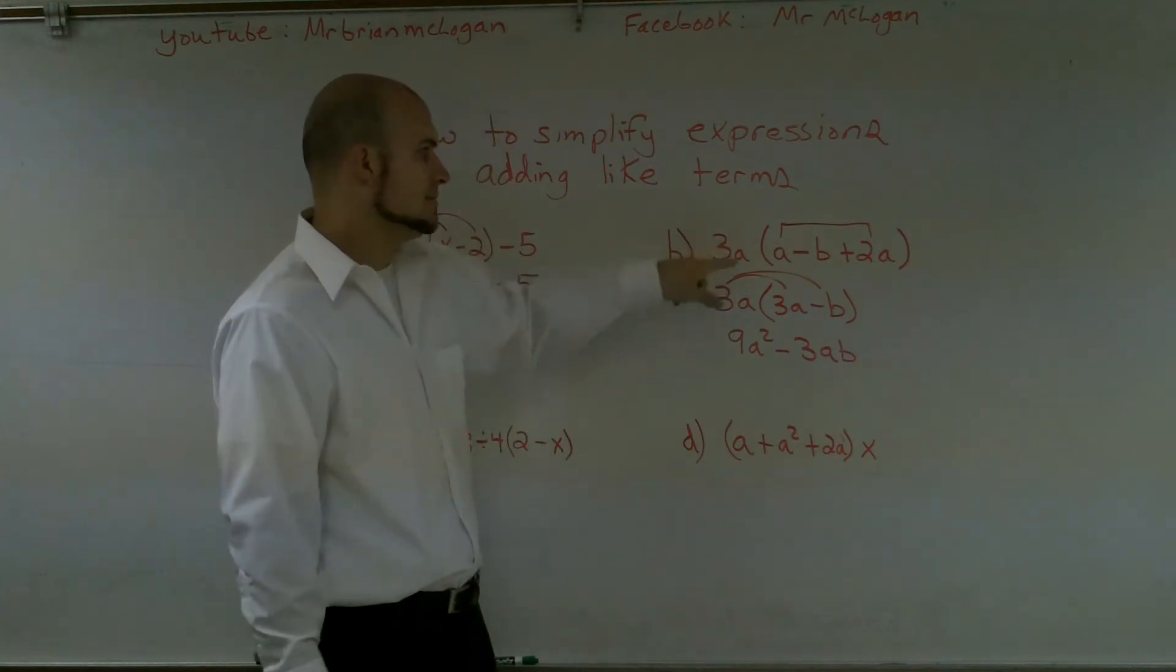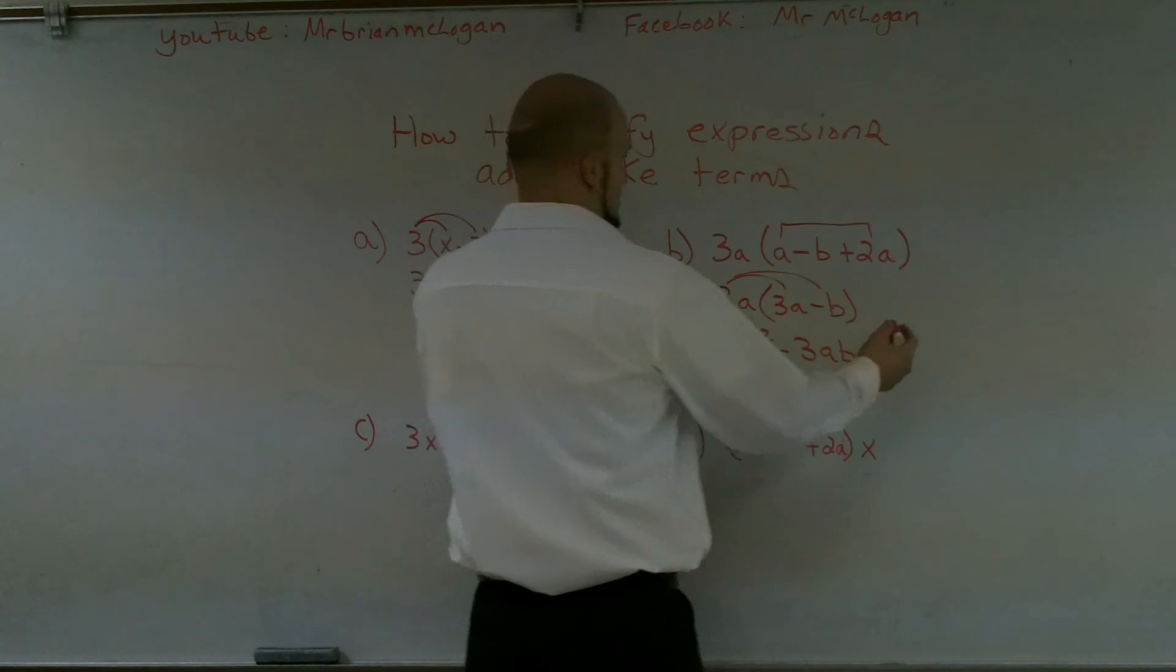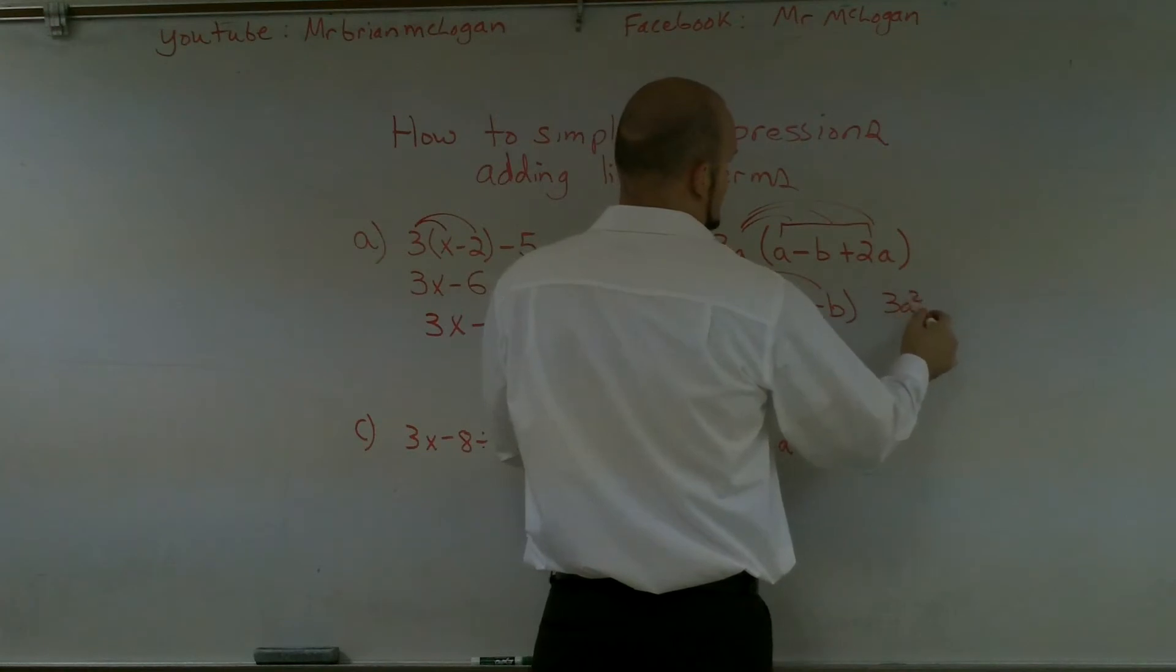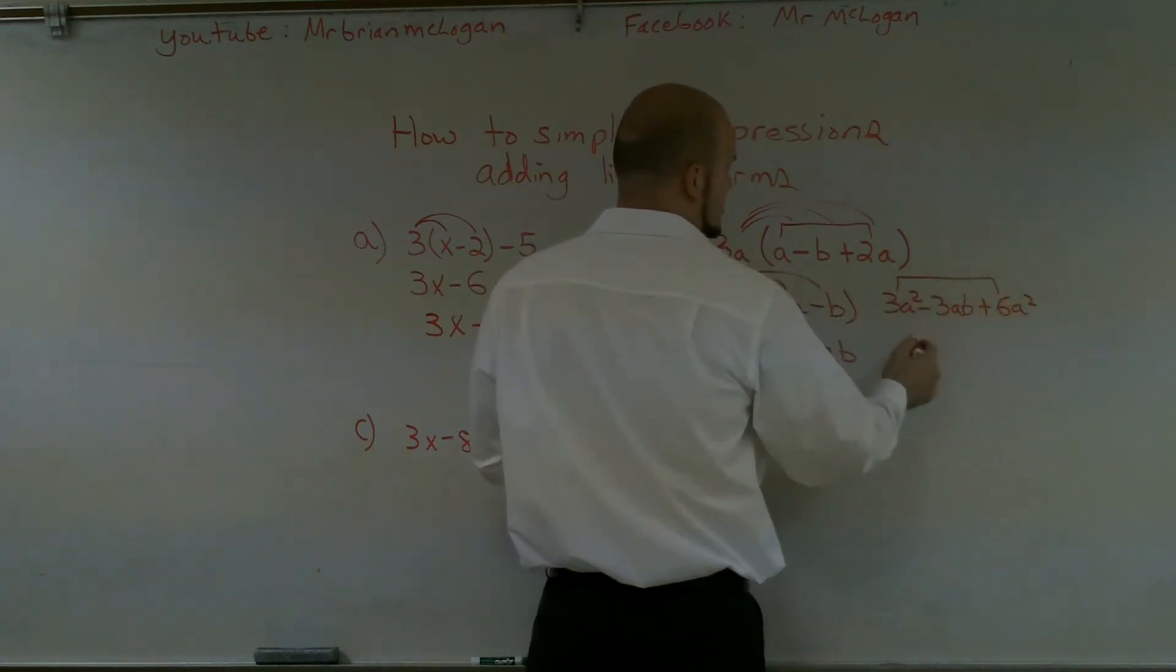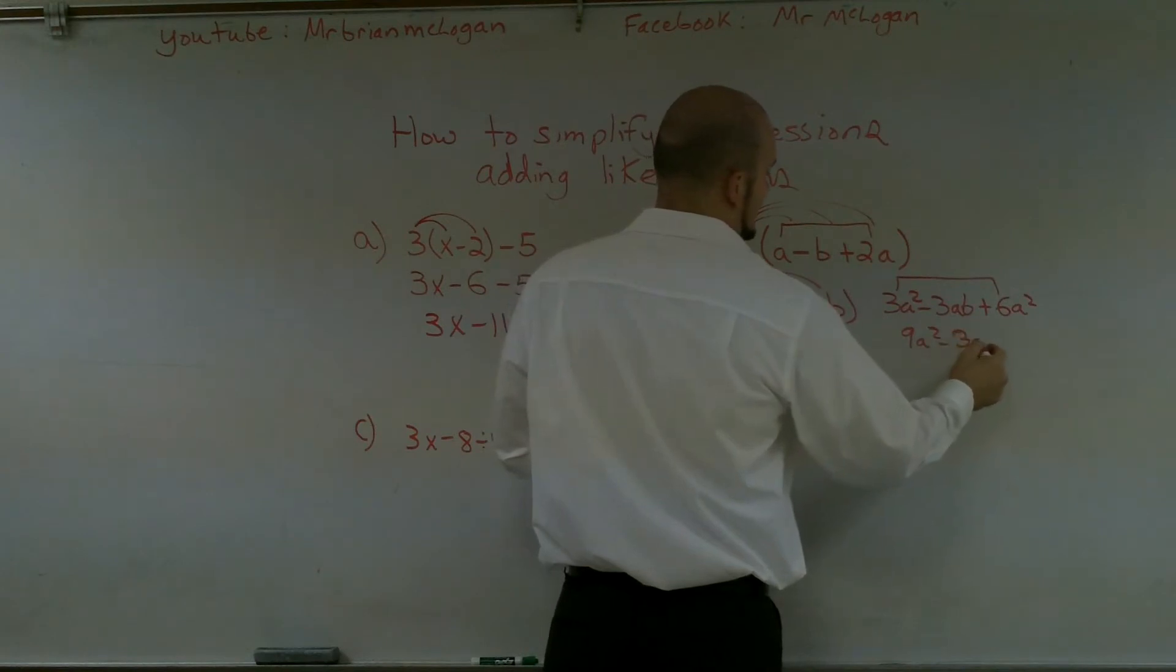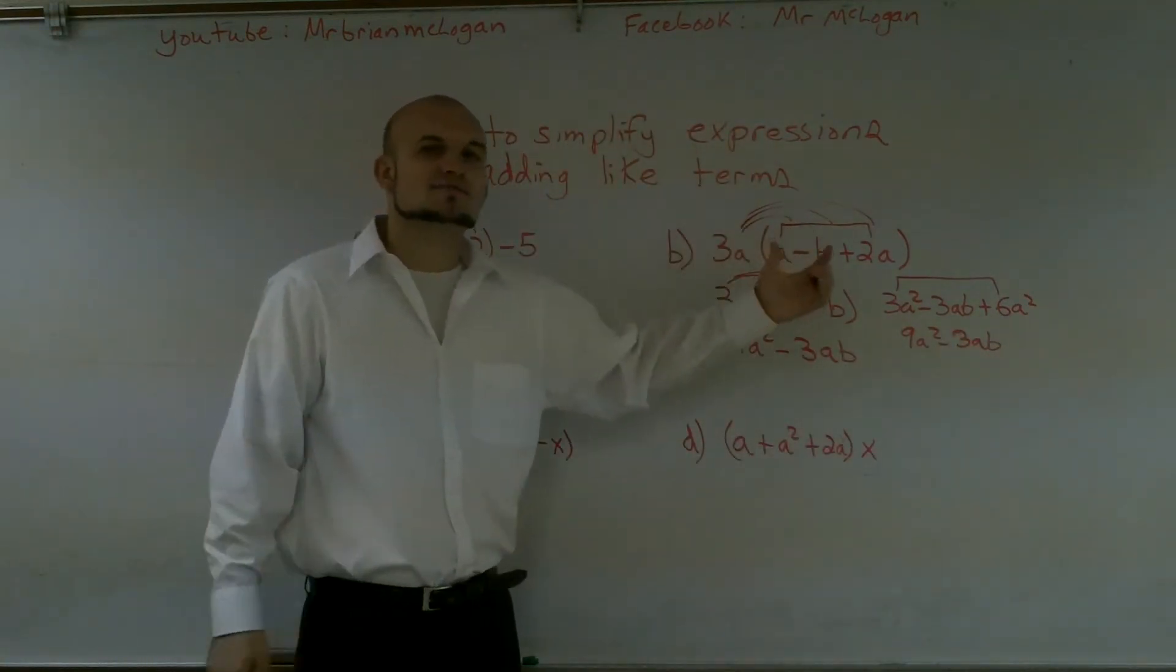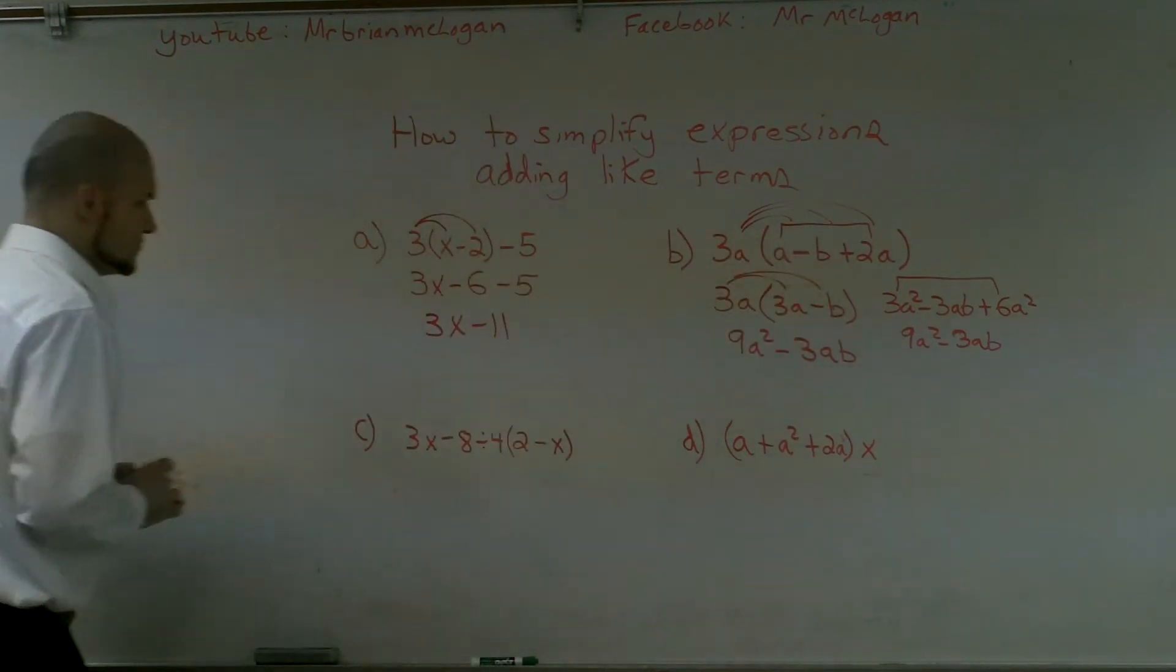If you wanted to do the distributive property first, you could also have done this and hopefully this will be on the video. You could just already distributive property first and get 3a squared minus 3ab and plus 6a squared. Then when you combine your like terms, you get 9a squared minus 3ab. So that is a different way to do it. However, it's always easiest to simplify your problem first before we actually do your next work.